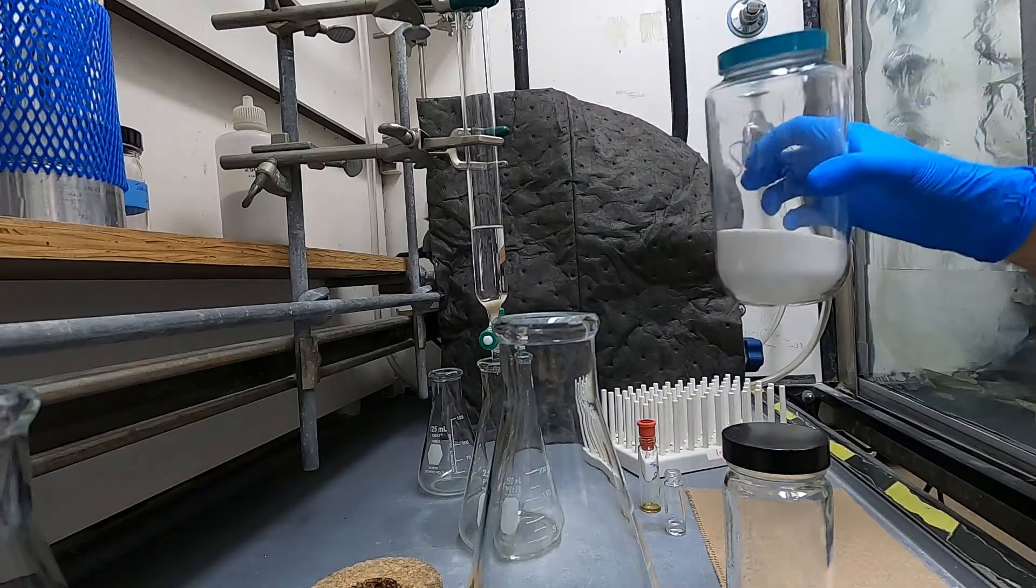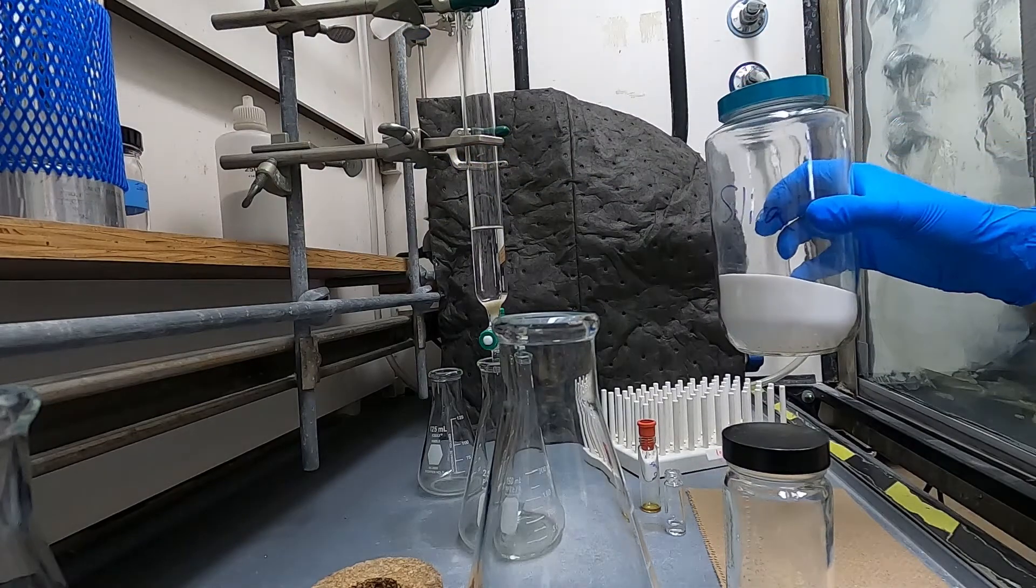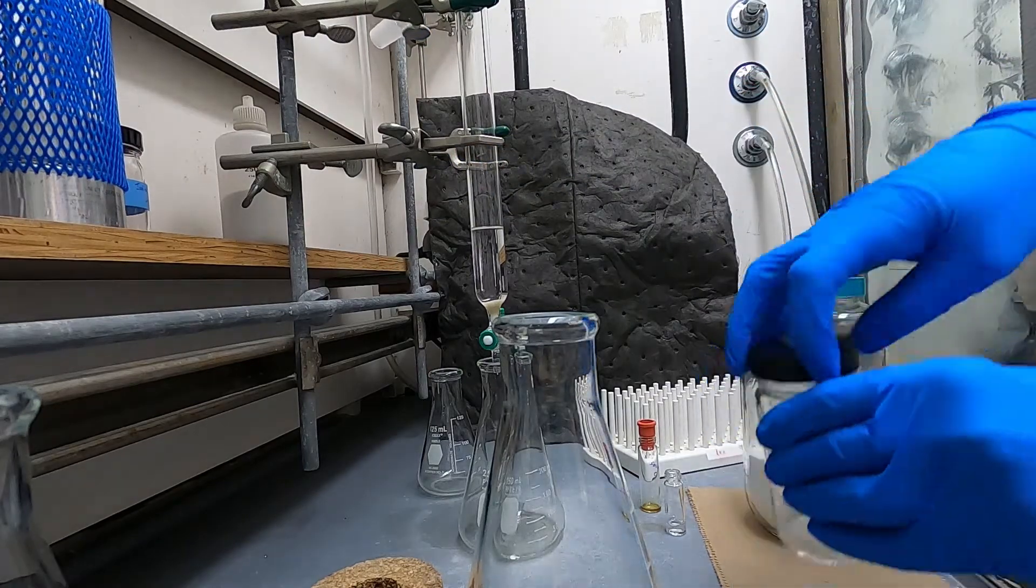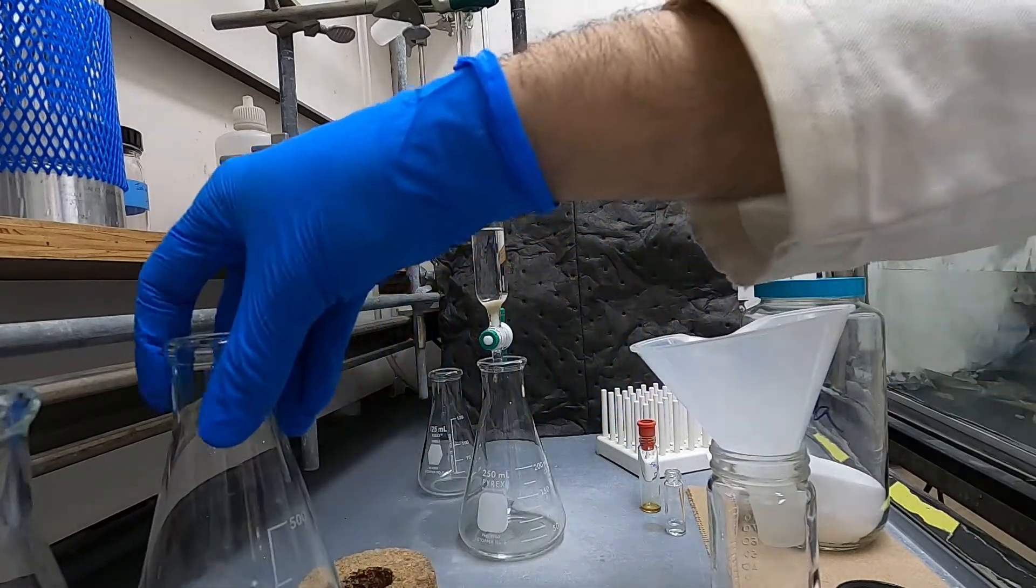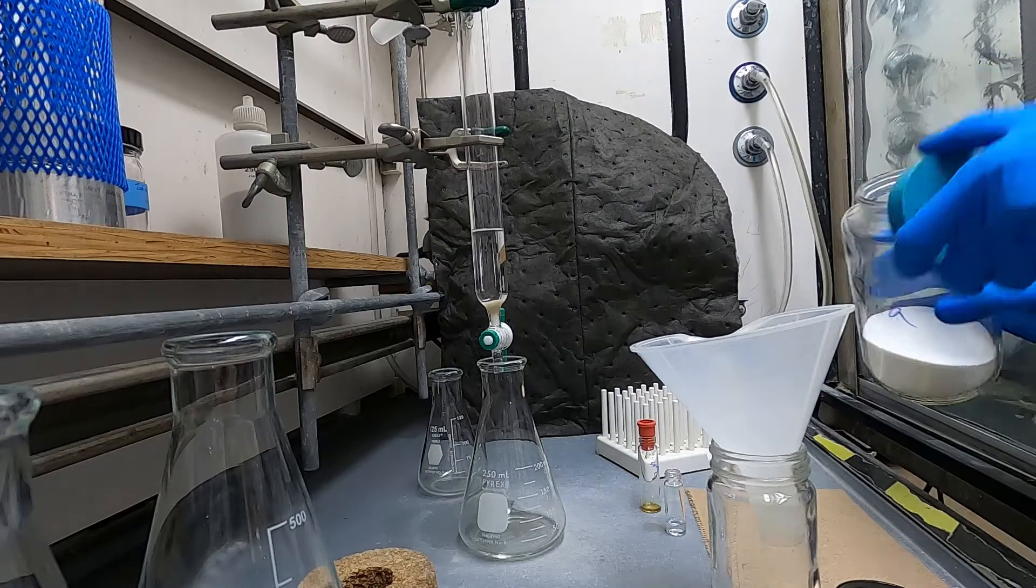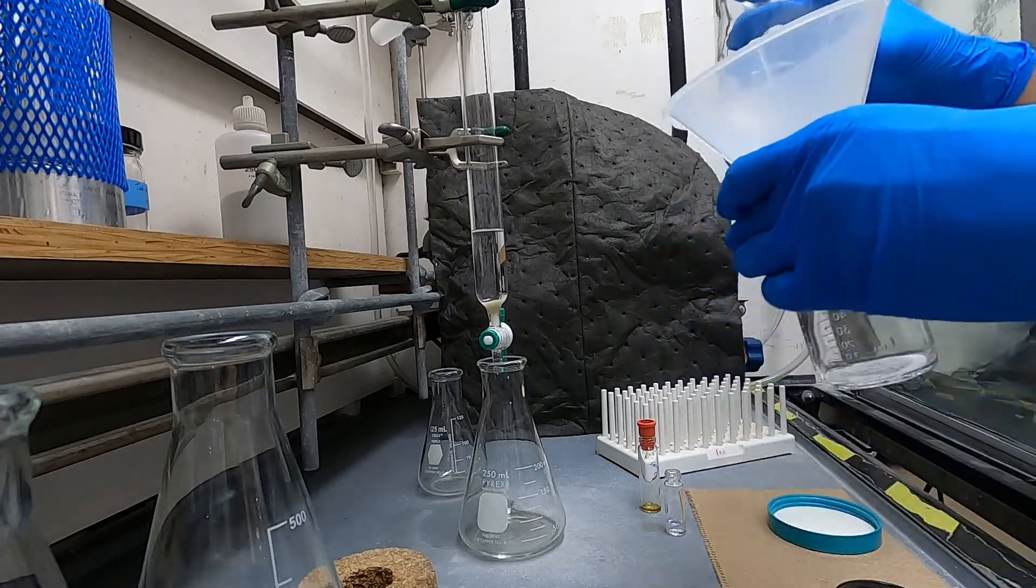And then I measure out my silica. I like to do a constant or a known amount of silica just so that I can reproduce the column conditions if I need to. So I have this little jar that has volume measurements on the side.